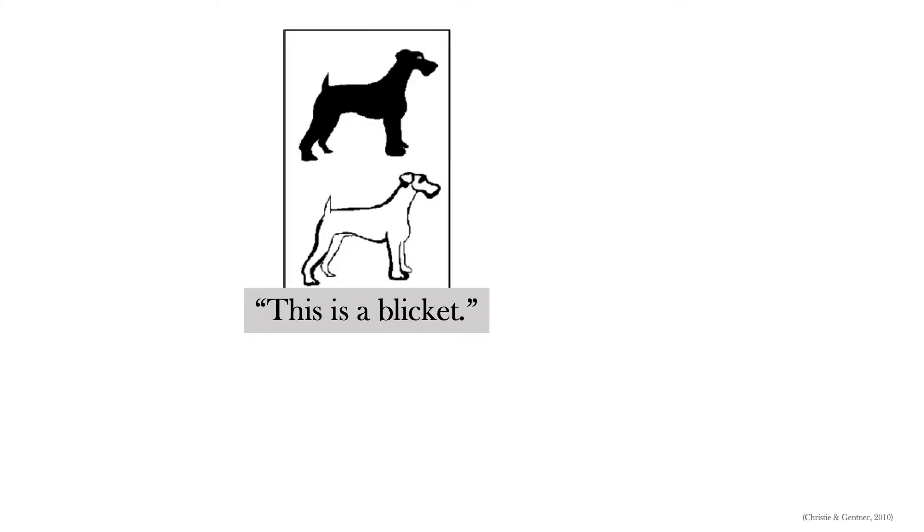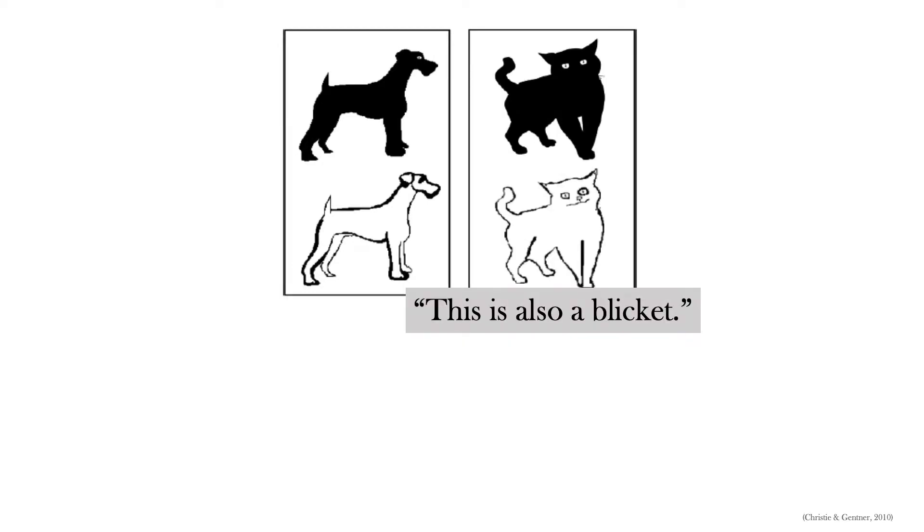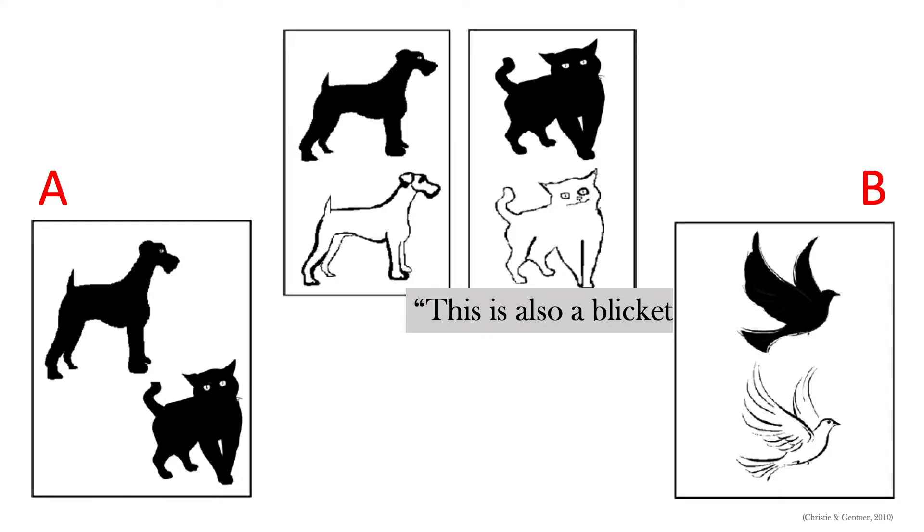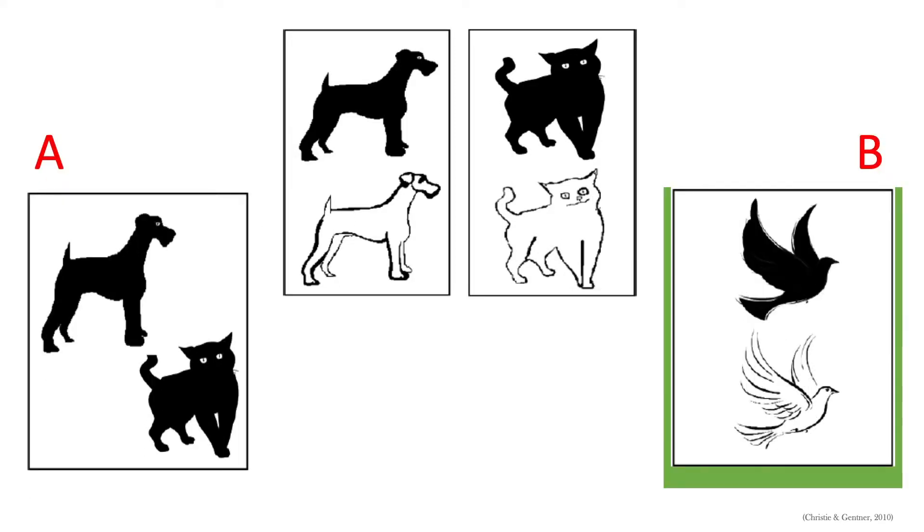In order to answer the question, can children learn through the process of comparison, they gave the child two example cards and placed them next to each other. So they said, this is a blicket and this is also a blicket. They gave them the same two choices that they'd seen before. Now their answers completely changed. So when children were given two example cards, they were much more likely to choose card B since it contained the exact same relation across all these cards.